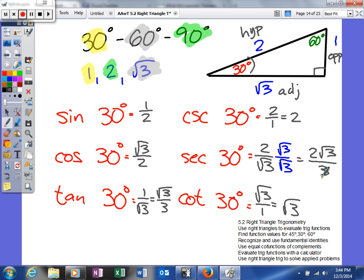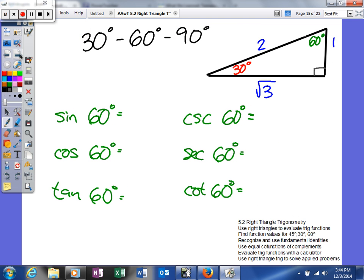Alright, that's 30-60-90, but that's using the 30 degree reference angle. What we can also do is we can take these same values, 1, 2, square root of 3, label our triangle. And this time we can actually use the 60 degree angle as our reference angle.